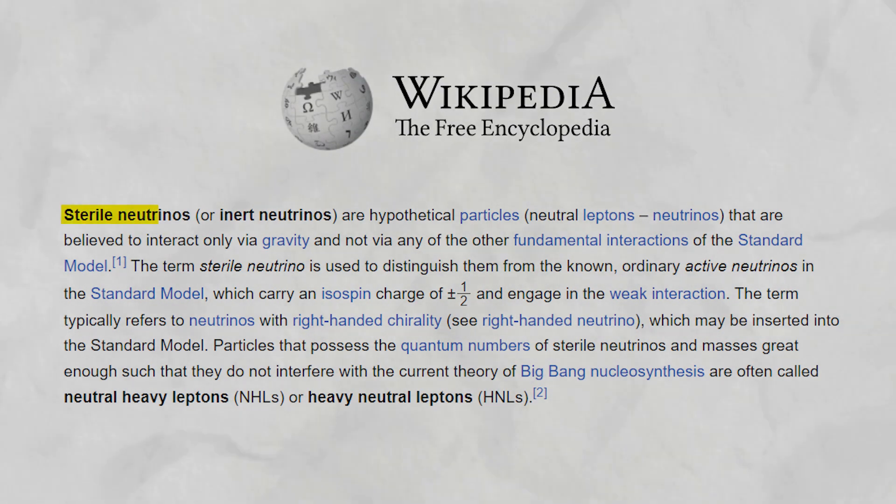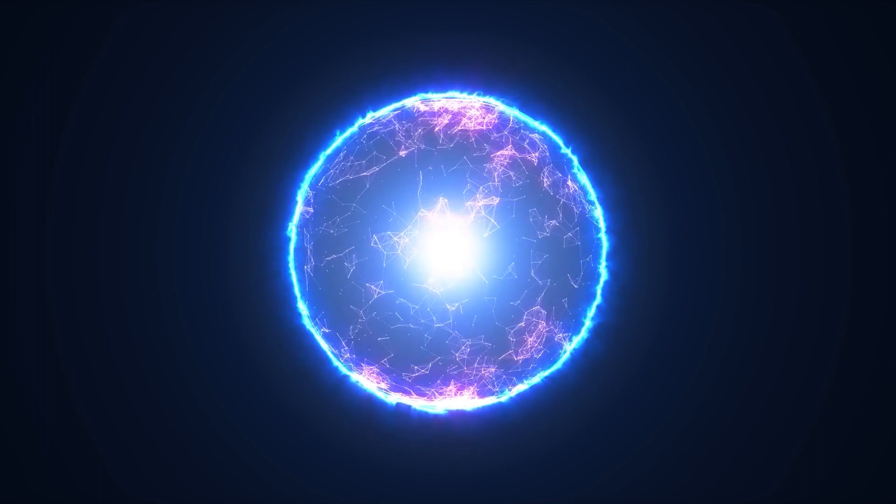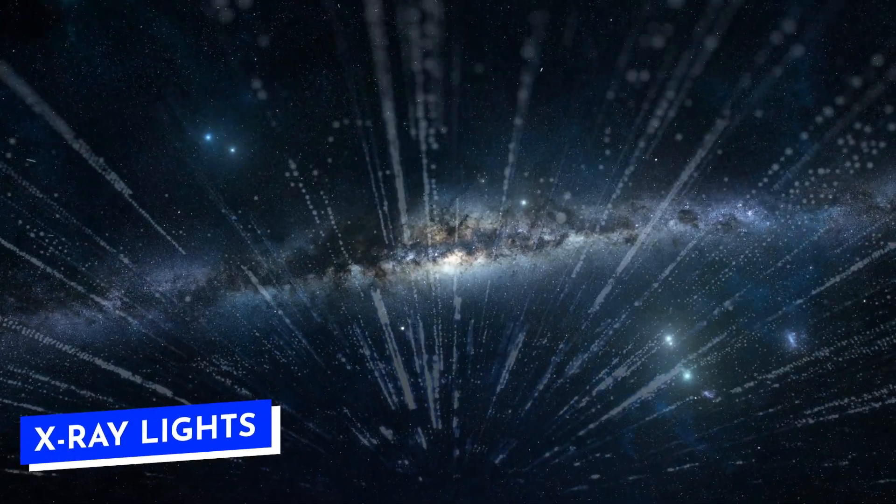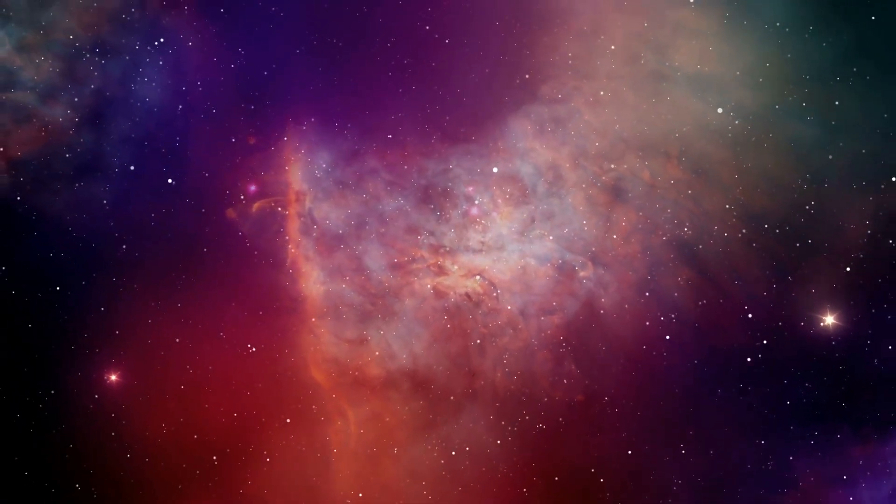Another interesting idea is the sterile neutrino, a tiny thing that barely interacts with regular stuff, making scientists think it might be the main piece of dark matter. Strange X-ray lights found in space make people wonder more, as they might show sterile neutrinos are there.